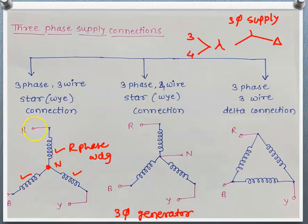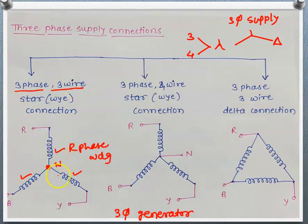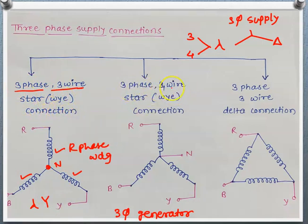The other terminals are denoted as R, Y, and B. This type of supply connection is known as three-phase three-wire connection — we have three phases R, Y, B and three wires for the output. It looks like a star or Y shape, and so it is called the three-phase three-wire star connection.